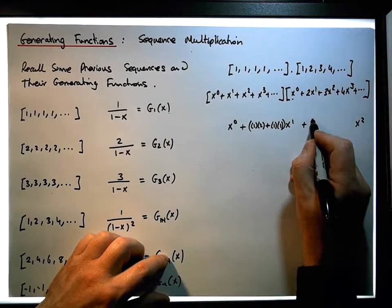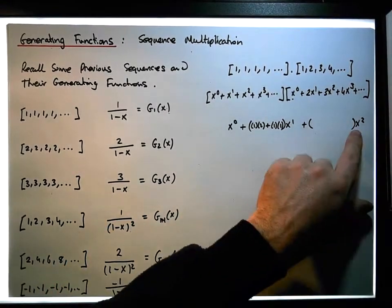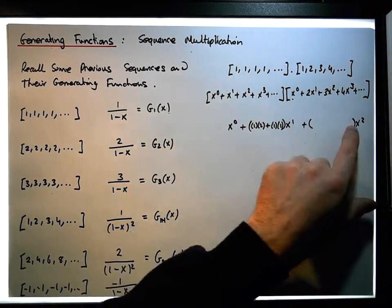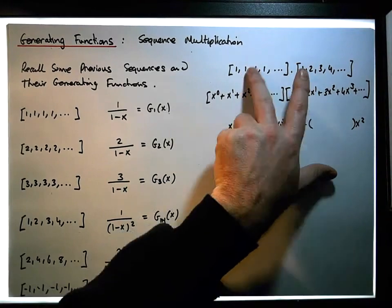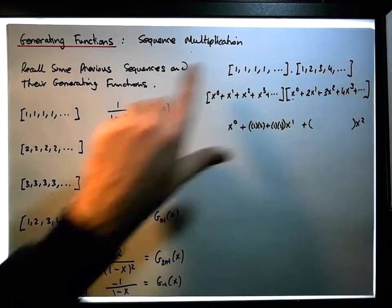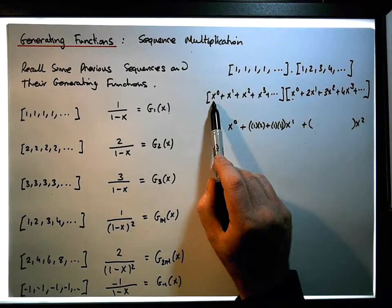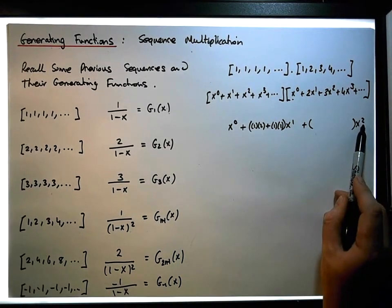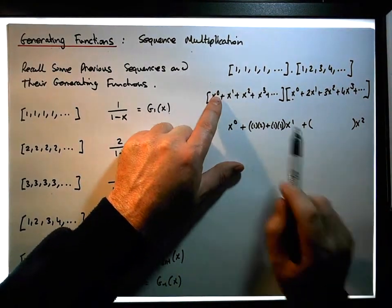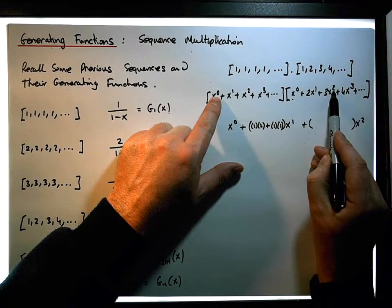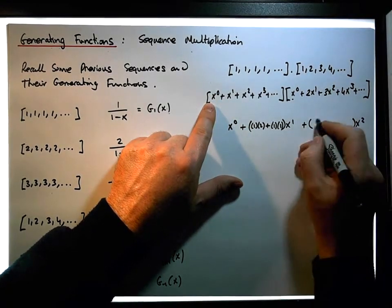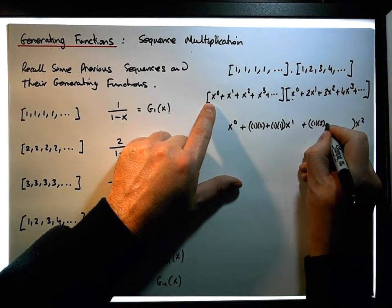When it comes to the coefficient of the x² term, we're going to have three terms. The product is a term by a term, a term by a term, and a term by a term. The terms are associated with the coefficients of the power functions within the power series, and the indexes must add to give us two. So x⁰ times x² — when we add the indexes we get two — the coefficients are ones times three.